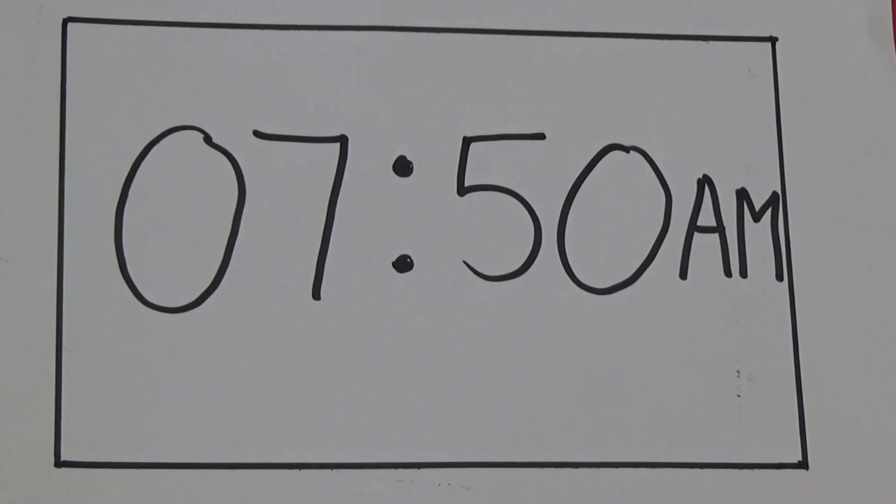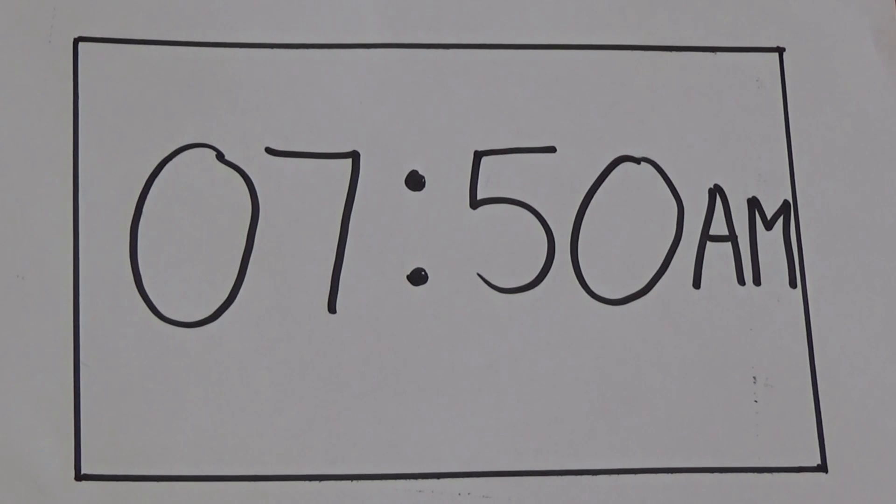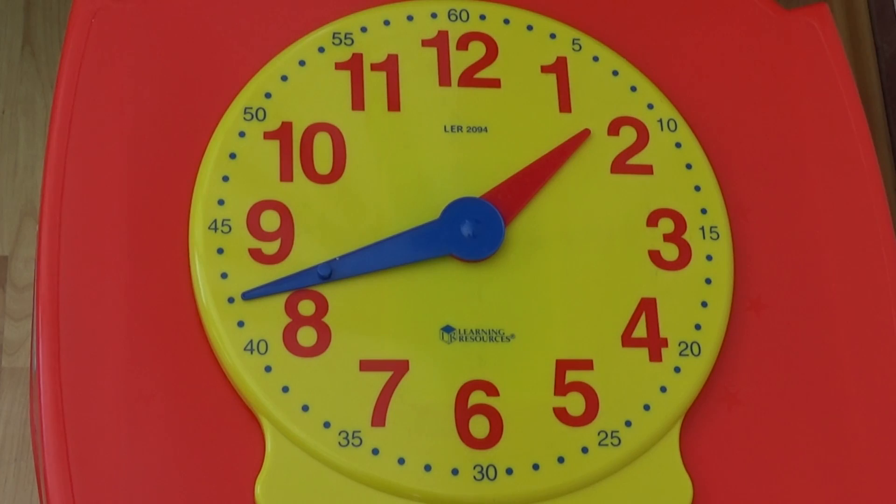As we are not yet at 8 o'clock the hour we are on is 7. If we look at the minutes on an analogue clock we can see that 10 to is the same as 50 minutes past 7. So the time in digital is 7:50. As it has AM written after it we know the time is 7:50 in the morning.